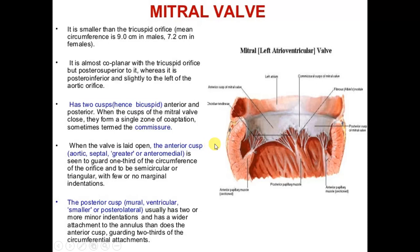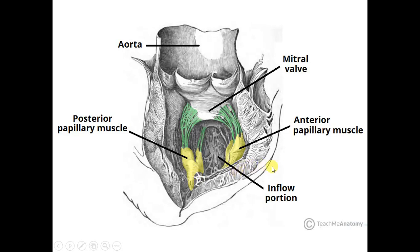During mitral valve replacement, care must be taken when placing stitches on the anterior cusp side, because damage can occur to the aortic valve, the atrioventricular node, and the conductive system of the heart. The aortic valve similarly has three semilunar cusps — two anterior and one posterior, forming anterolateral, anteromedial, and posterior cusps — and the origin of the coronary arteries from the aortic sinus is noted here.